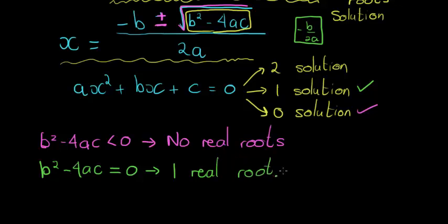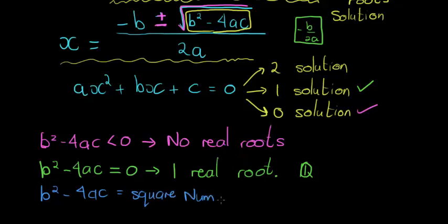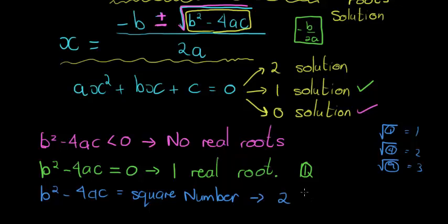And that root will always be rational. The next thing is if that value inside the square root is actually a square number. So if b squared minus 4ac is a square number — that's a number like 1, 4, 9 — any number that I can find the square root of easily. Square root of 1 is 1, square root of 4 is 2, square root of 9 is 3. These are square numbers. If I do get a square number, then I will have two rational roots.